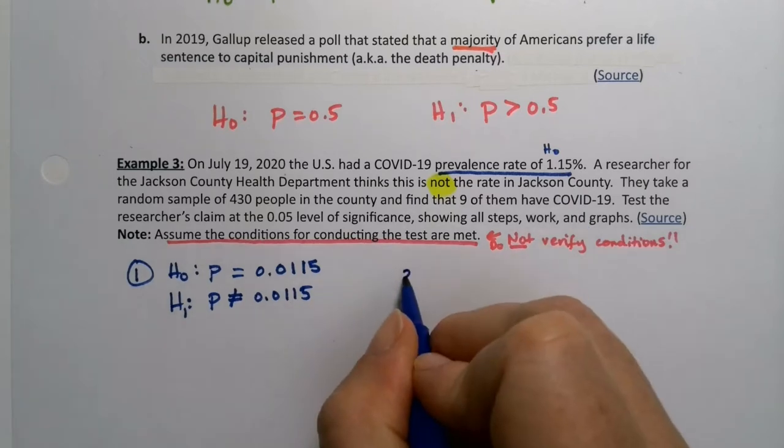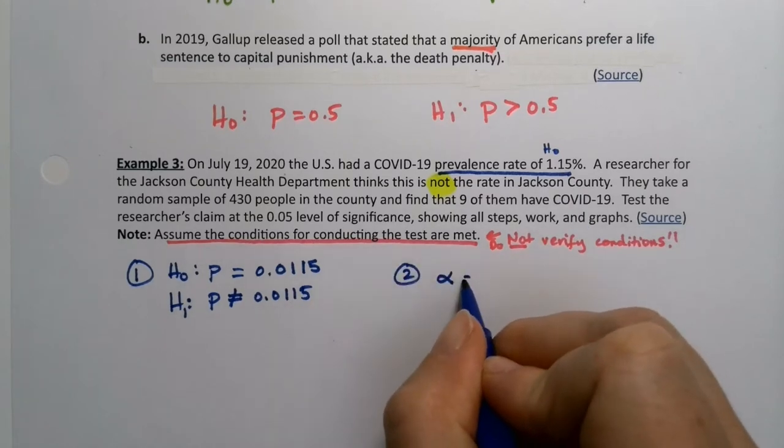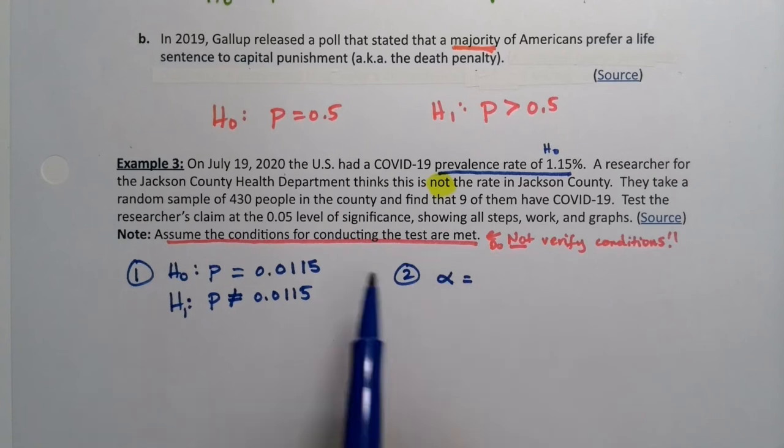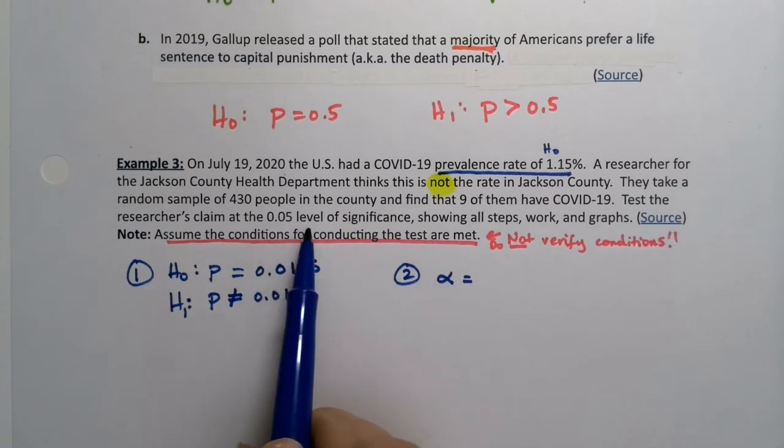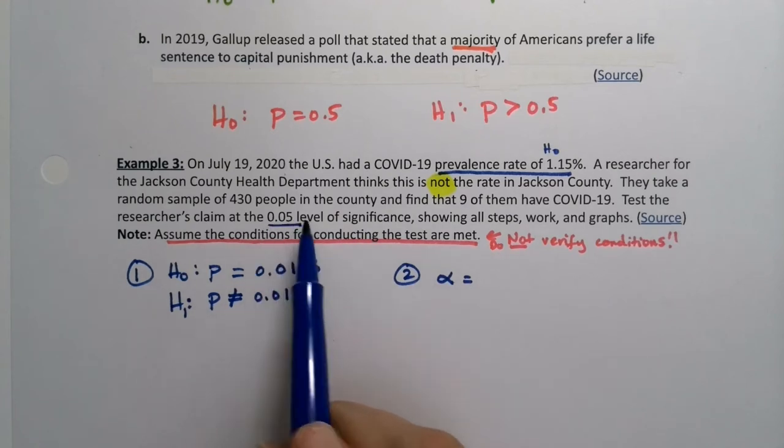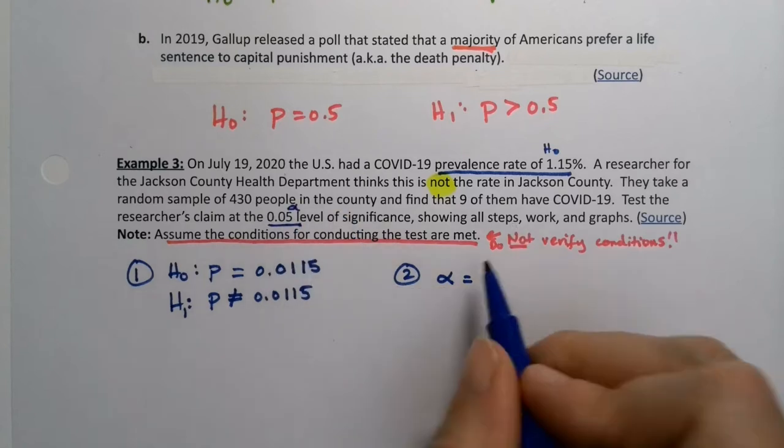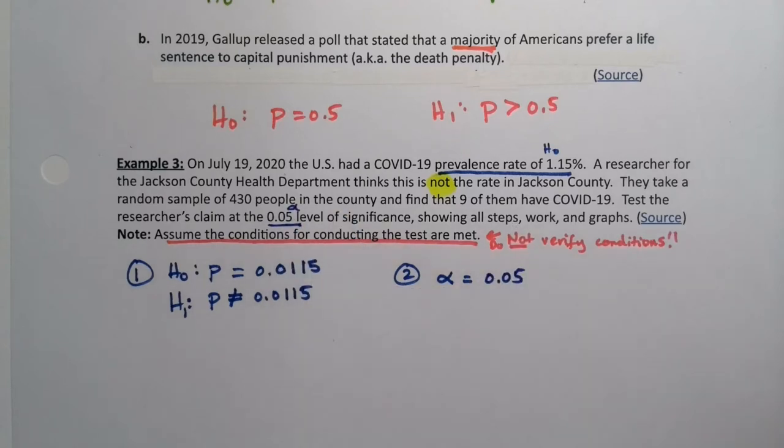Step two. Alpha is your level of significance and it's always given. So it's right here, alpha equals 0.05. Done with that.